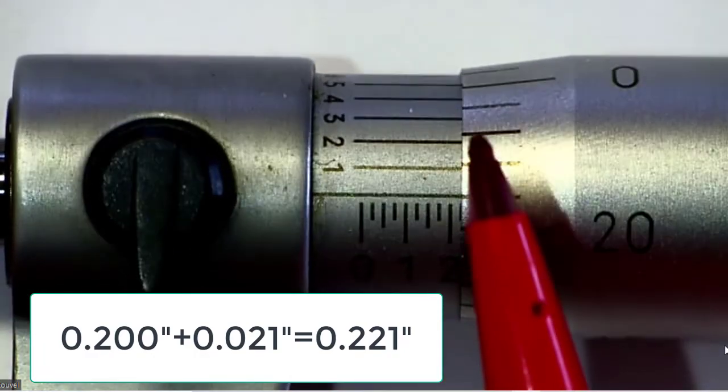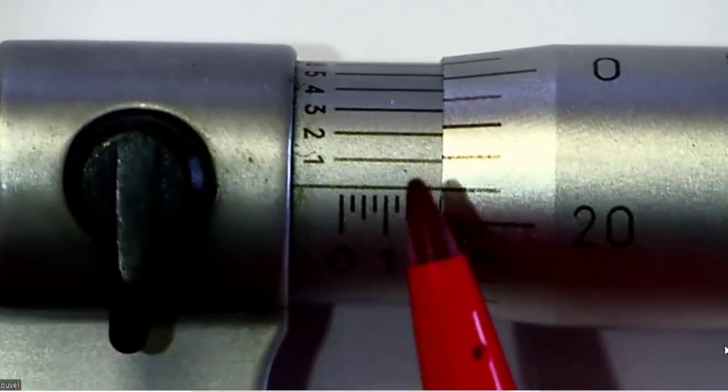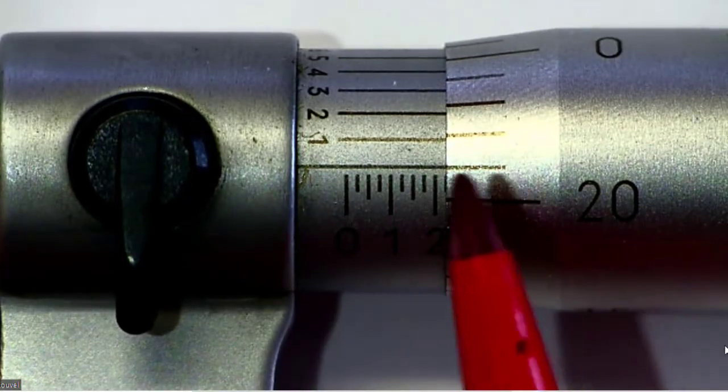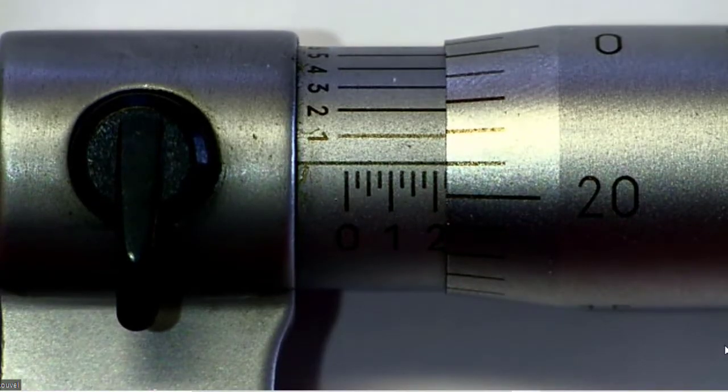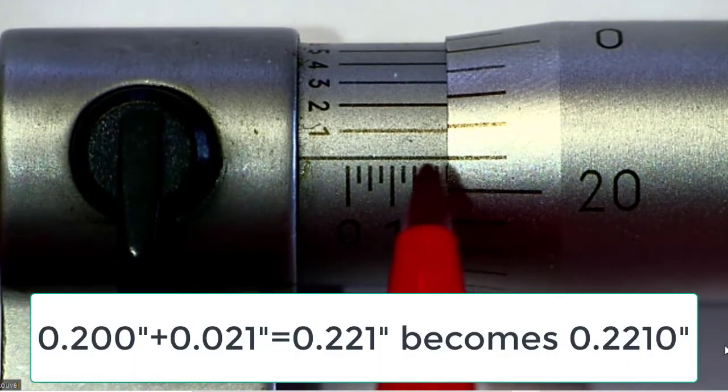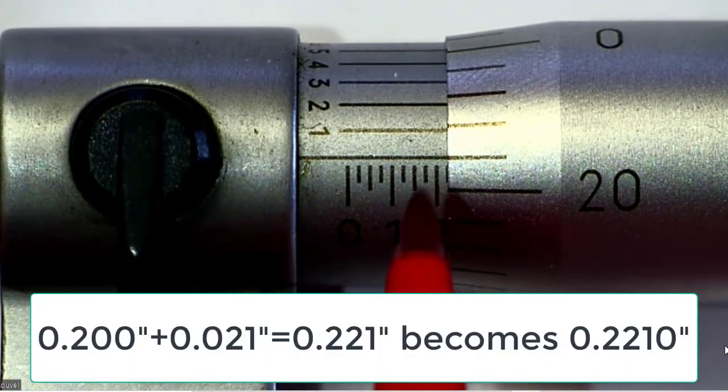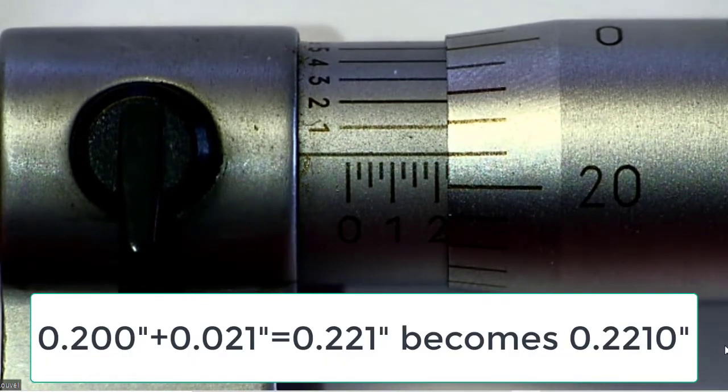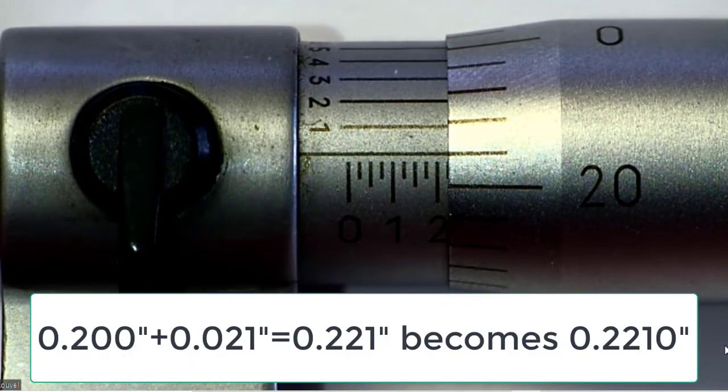Now, we could go and look for what number lines up best, but in fact, our baseline lines up perfectly here, and that means that our fourth digit will be a zero, and so since this lines up perfectly, we make that fourth digit a zero, and our reading here is .2210, and we're done.